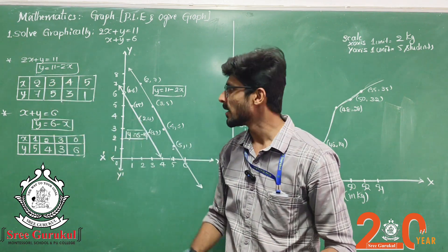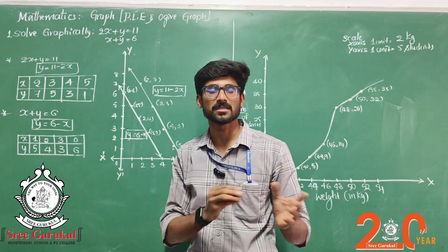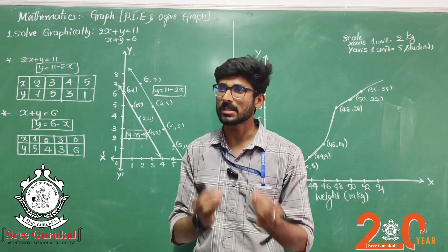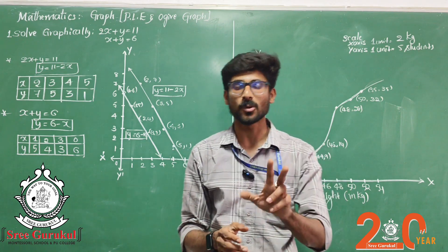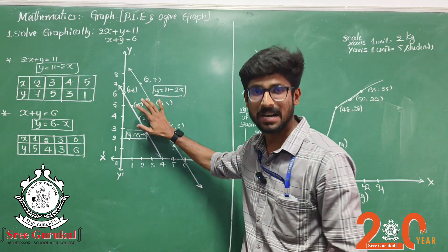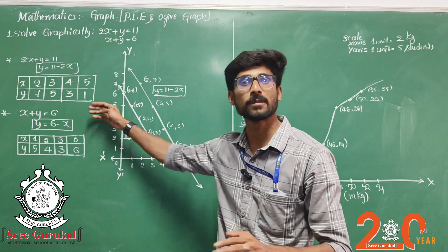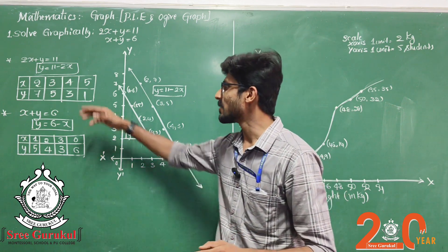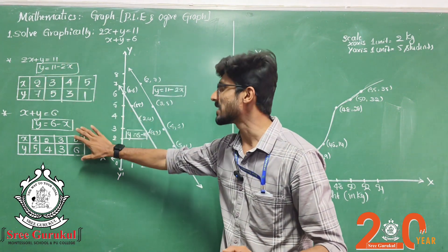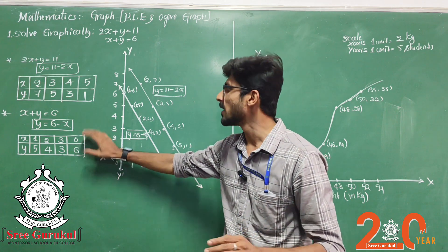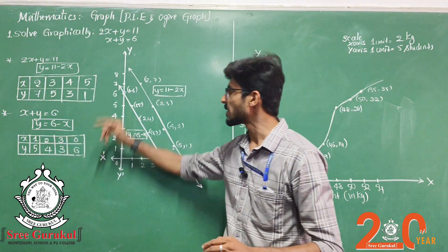This is the trial-and-error process. Minimum, take four points — it differs from teacher to teacher. Some may say three, and technically two points are enough to connect a line, but considering the four-mark weightage, it's better to go with four points. Take four coordinate points for X and Y for the first equation, and similarly find four points for the second equation, for example where Y equals 6 minus X.